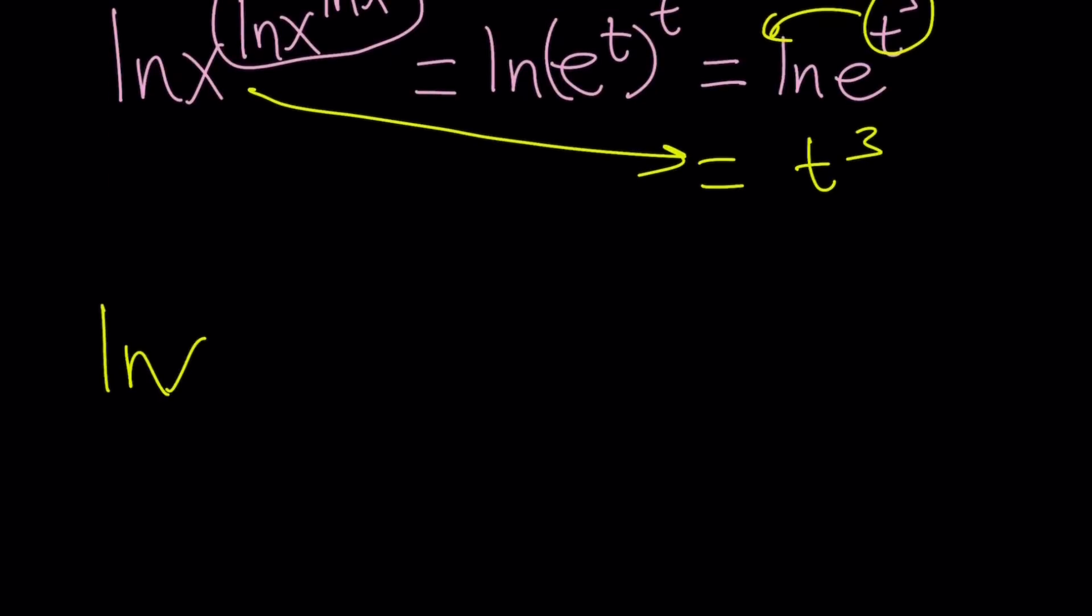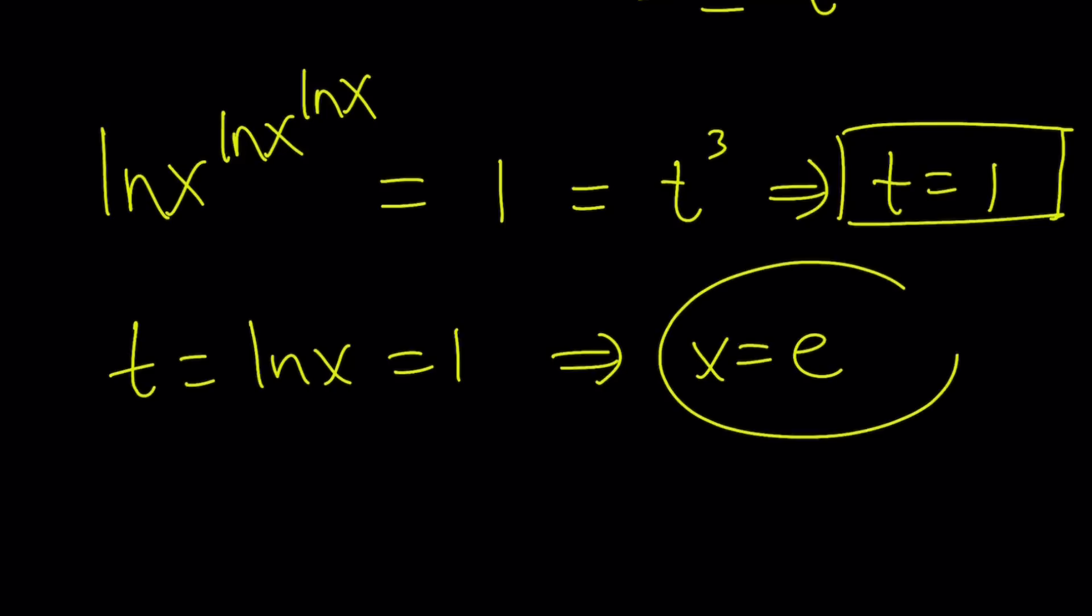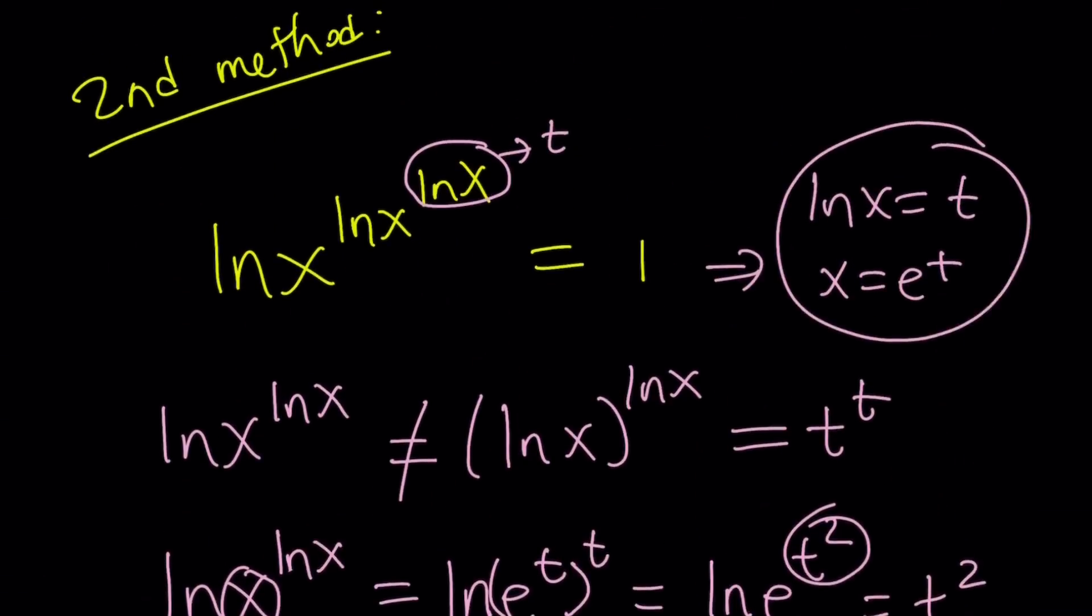So we had ln x to the power ln x to the power ln x equals 1, but it's equal to t cubed. So from here, t equals 1. So since t equals 1, what is t? t is equal to ln x, and that's equal to 1. This implies, by definition again, x equals e. Again we got the same solution, which should not be a surprise. Of course, we're doing the same problem. If you got a different solution, that would be very problematic.